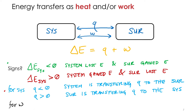We'll do the same thing for work. The same logic holds, except we have to think about what it means to do work. If work is negative — pretend I'm the system — I'm opening this door. Am I doing work? Yes, I'm doing work. Am I gaining or losing energy? I'm losing energy, so the sign is negative. If work is negative, that means the system is doing work on the surroundings.